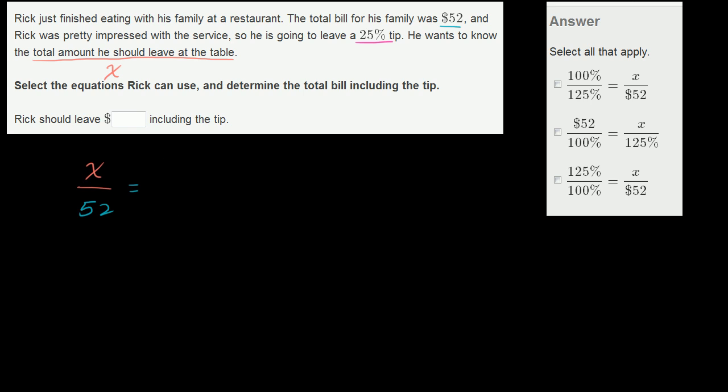So you could view the actual amount of the bill as being 100% of the bill. But he doesn't want to just pay 100%. He wants to pay 100% plus a 25% tip. So we could rewrite everything as x over 52 is equal to 100% plus 25%. I could write that as 125% over 100%.